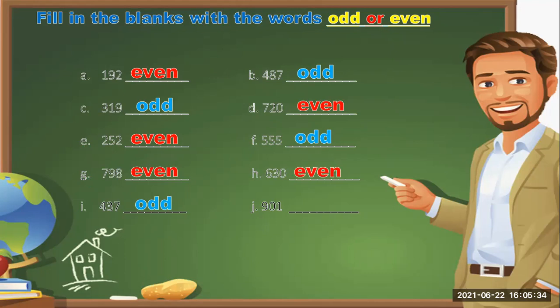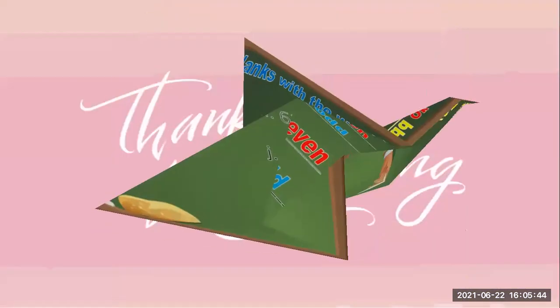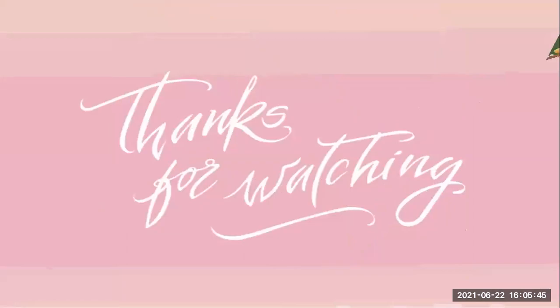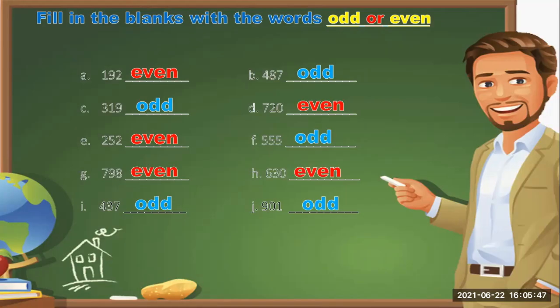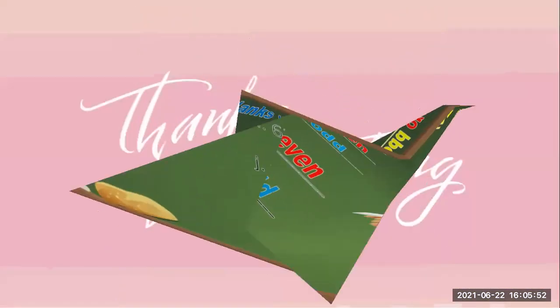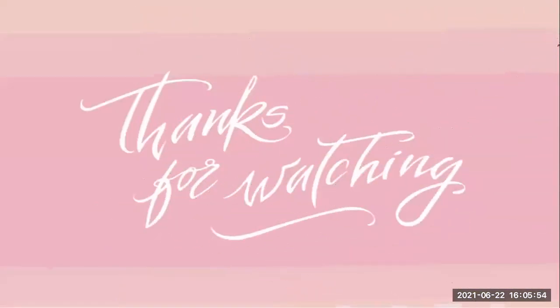437 is an odd number because 7 is an odd number. 901 is an odd number because 1 is an odd number. Thank you so much for watching. Goodbye, see you next time.